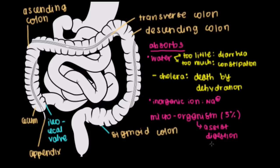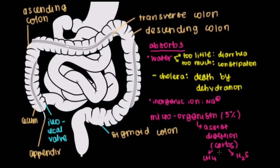These microorganisms are very important for digesting carbs. The byproducts you get from that are things like methane (CH4) and hydrogen sulfide. Methane causes a lot of flatulence, and hydrogen sulfide is something that smells terrible. One food that gets a bad rep is beans, which are rich in carbohydrates we can't absorb ourselves — so the microorganisms in our large intestine do most of the digestion of those carbohydrates, producing methane and hydrogen sulfide.